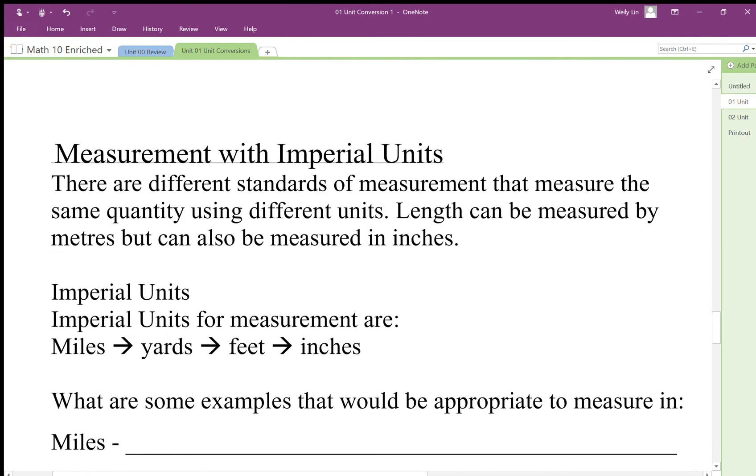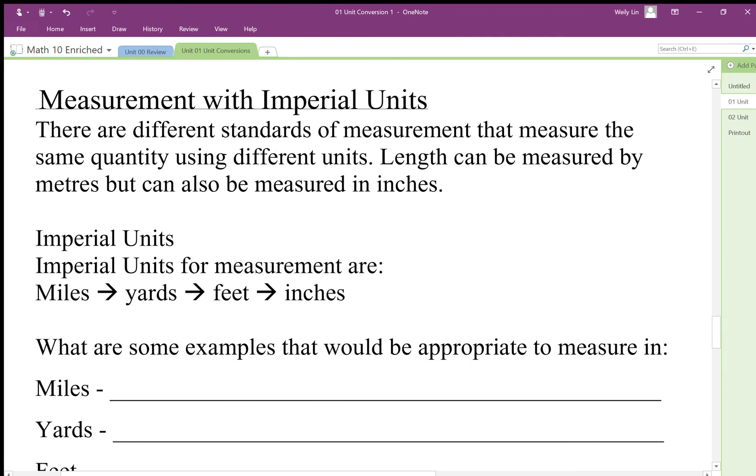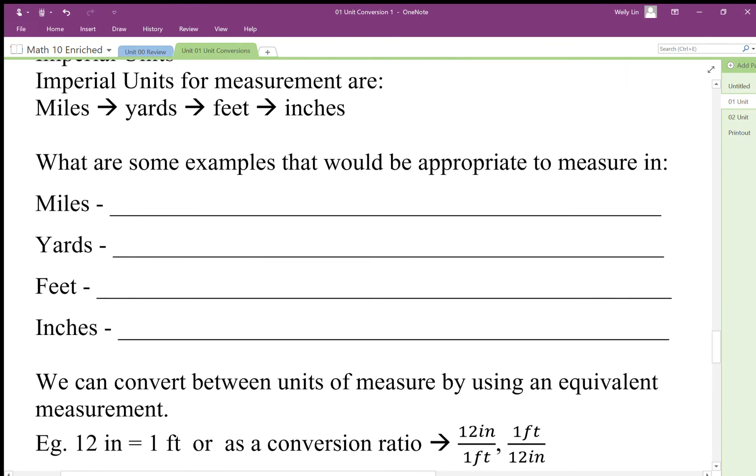When we talk about measurement we still use imperial units, so we need to be able to convert between imperial and metric, or SI. We need to know what kind of units we're going to use when we're measuring things.